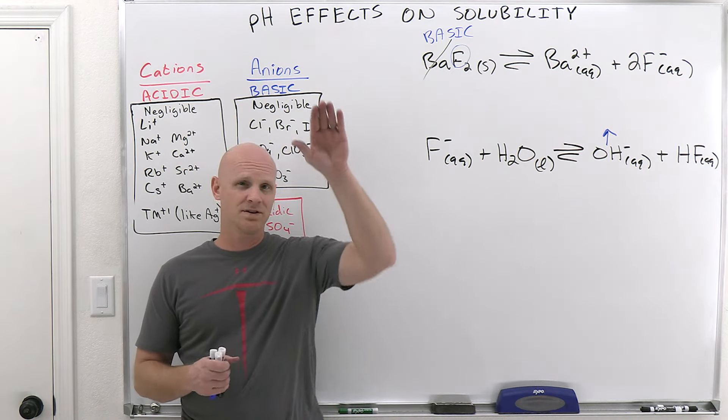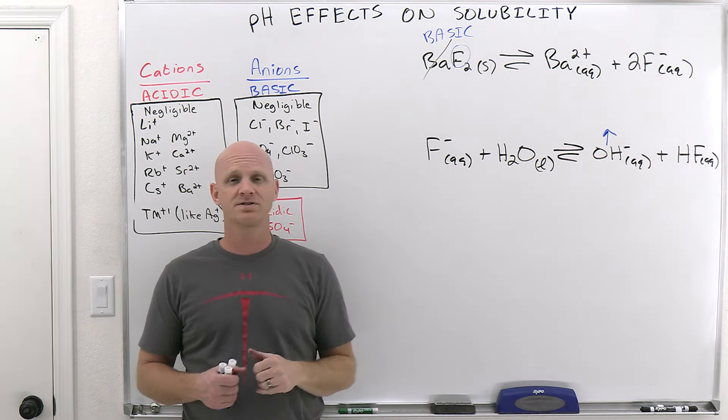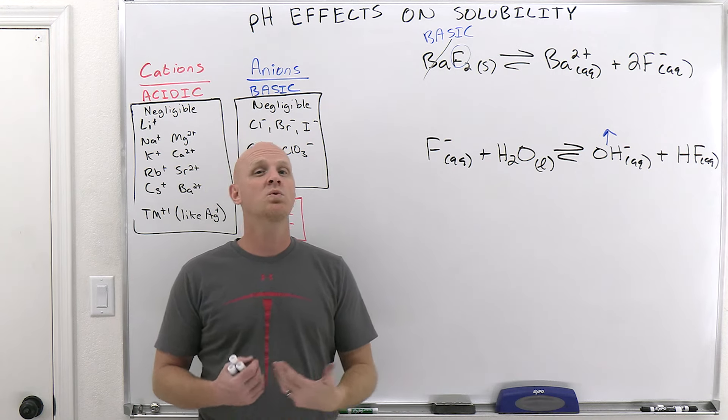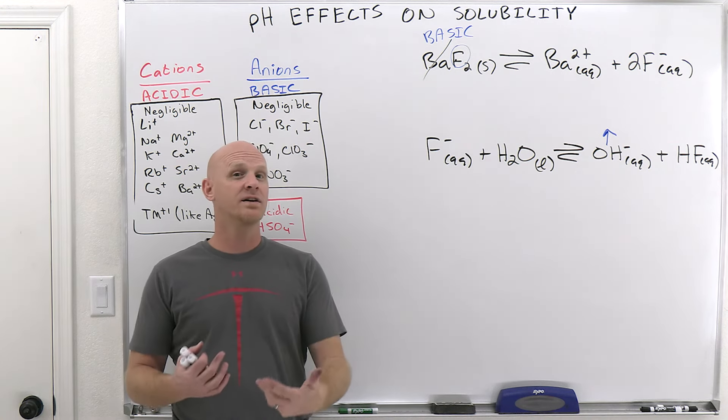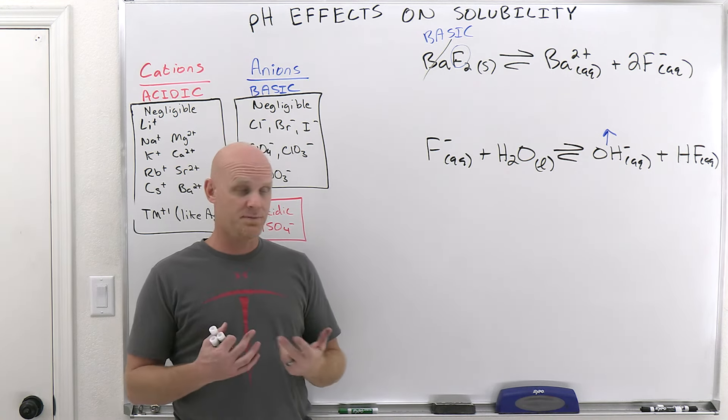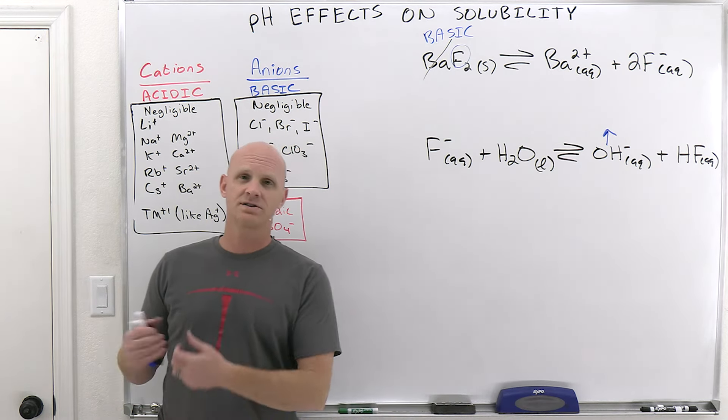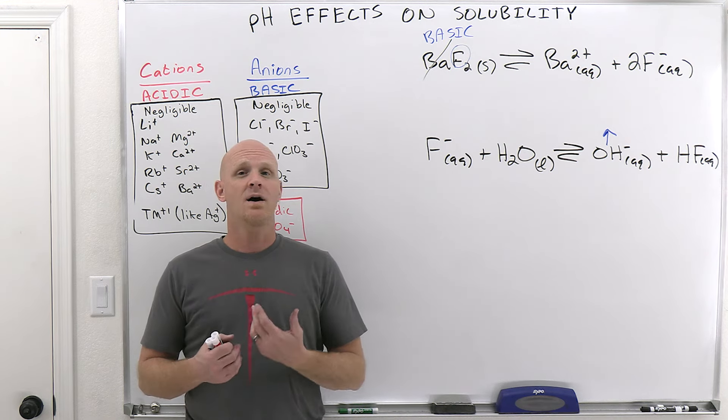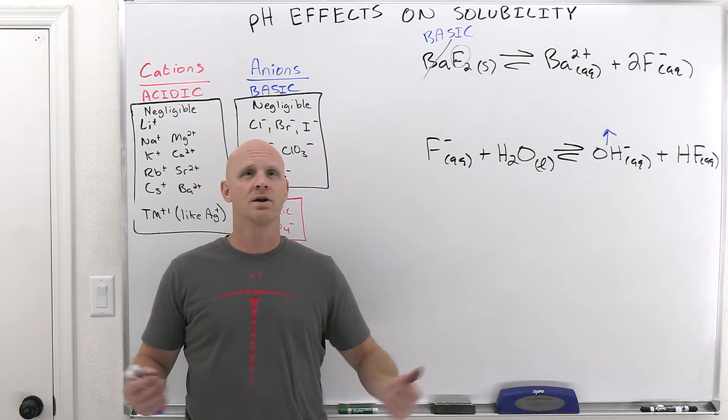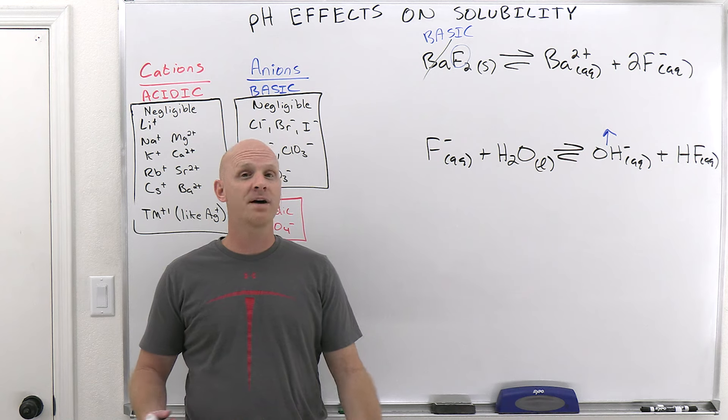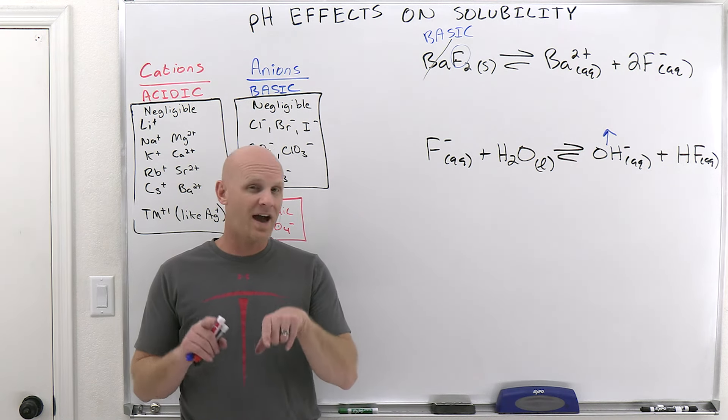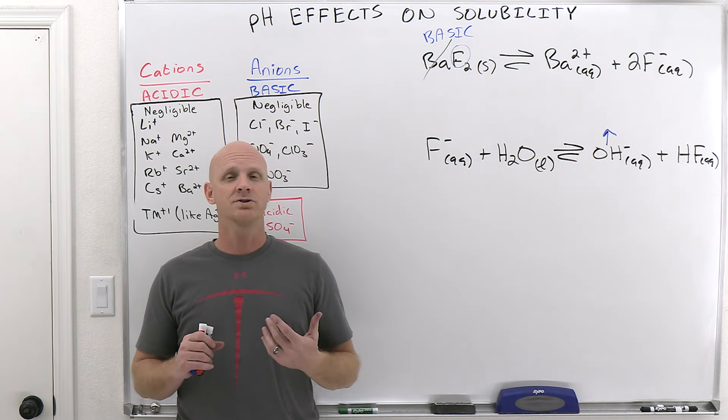So common questions on this is you might be given a multiple choice question where you've got five different salts there and you might have to identify which one would be more soluble in an acidic solution. And you'd be picking a basic salt. Which one would be more soluble in a basic solution? You'd be picking an acidic salt. Or you might get a question that says, which of the following would have a solubility that's largely unaffected by a change in the pH. And in that case, you'd be looking for a neutral salt.